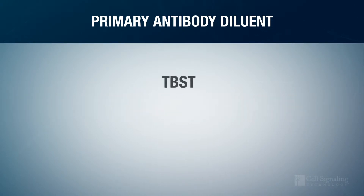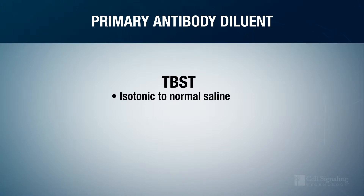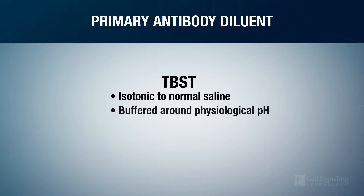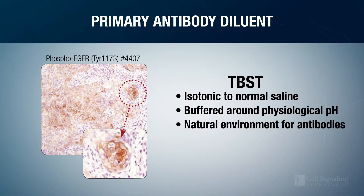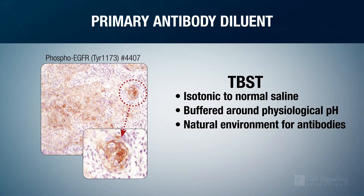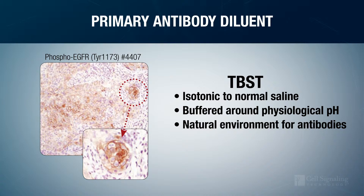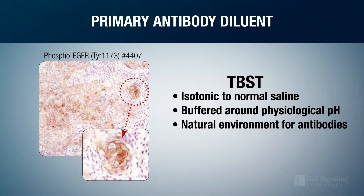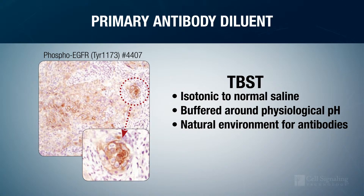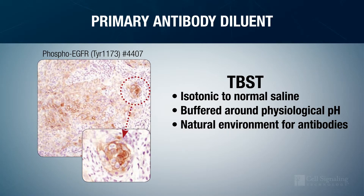TBST is commonly used for this purpose. It is isotonic to normal saline and buffered around physiological pH. These conditions mimic the environment that antibodies and antigens encounter during the natural course of an immune system interaction. As a result, TBST works well for many antibodies, such as this antibody for phospho-EGF receptor.